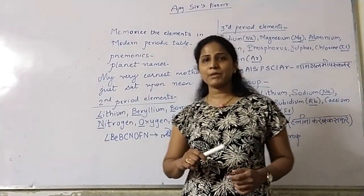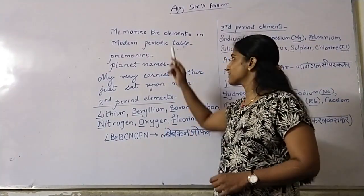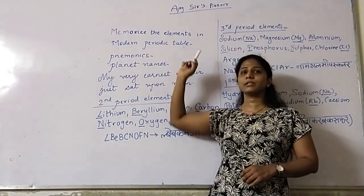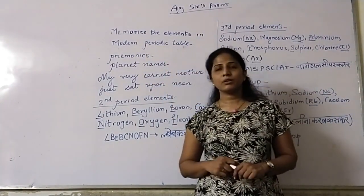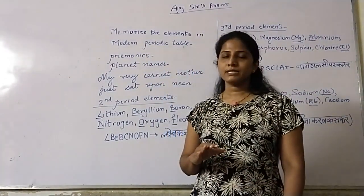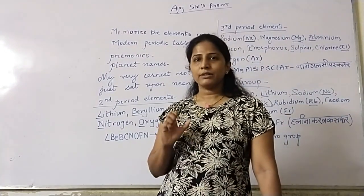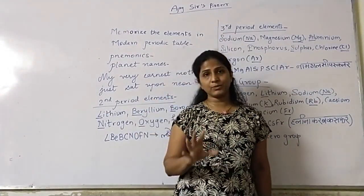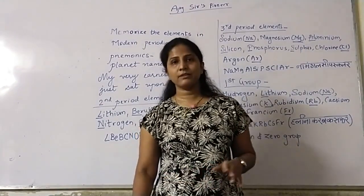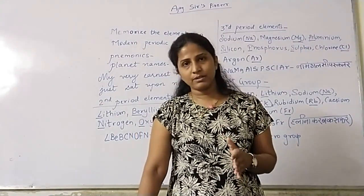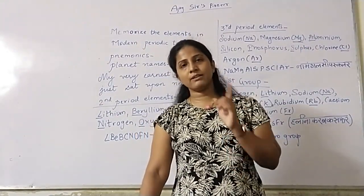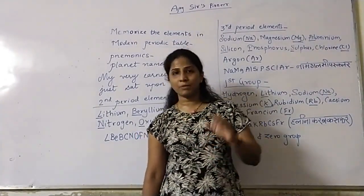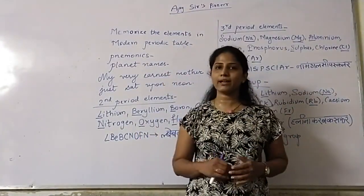Good morning everyone. I am Mamta Mam from Ajay Sales Pioneer. Today we are here to memorize the elements in the modern periodic table. We have to memorize the first 20 elements — the first group, second group, the halogens, and the zero group. We have to remember those 4 sets of elements.